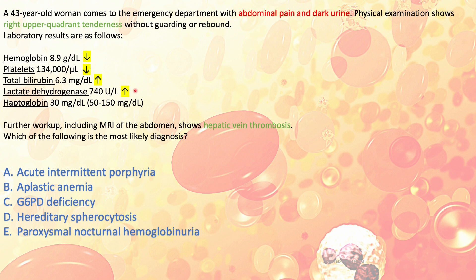Whenever you see anemia — low hemoglobin — with high bilirubin and high LDH, you know hemolysis is taking place. This type of anemia is hemolytic because red blood cells are being broken down, releasing LDH and bilirubin. Now an additional clue here is haptoglobin — a low haptoglobin level indicates the hemolytic anemia is intravascular, taking place inside the circulation.